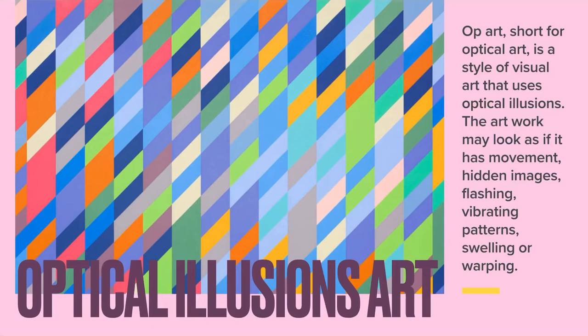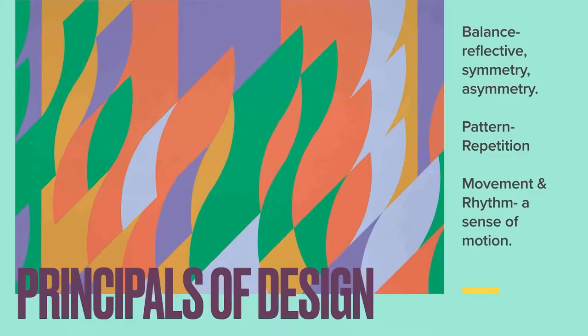Optical illusion art. OP art, short for optical art, is a style of visual art that uses optical illusions. The artwork may look as if it has movement, hidden images, vibrating or vibration patterns, swelling or warping. So if you've ever seen a picture and it looked like it was moving, and you know it wasn't moving, that can be considered optical illusion art.